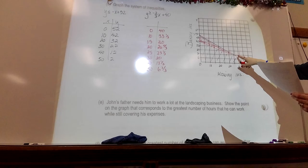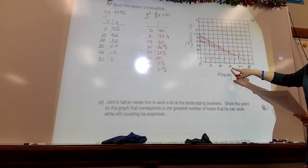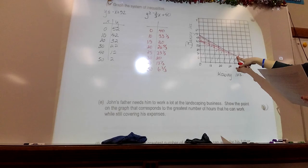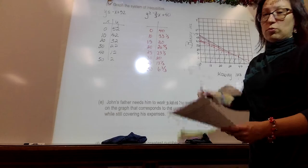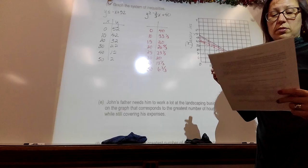John's father needs him to work at the landscaping business. Show the point on the graph that corresponds to the greatest number of hours that he can work while still covering his expenses. That would be right here. Well, it's close to right here. The greatest amount would be mowing is down here. So it would be right about there. And the thing that's going to get him the most money is 36 and 16.